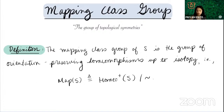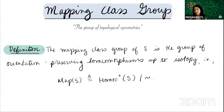Mapping class groups are really, really important — even if you're only thinking about finite type surfaces. Understanding the topological symmetries of a space is fundamental. They have connections to algebraic geometry and the moduli space of Riemann surfaces, and tons of connections to three-manifold theory. A lot of that work is due to big contributions by Thurston — for instance, if you know your mapping class is pseudo-Anosov, then the mapping torus you create using that homeomorphism is hyperbolic. That's just an amazing result.